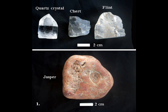Strictly, flint is chert that formed around 100 million years ago in Western European chalk. However, outside Europe, the names flint and chert are often used interchangeably. The jasper pebble is impure and consists of haematite, that is an oxide of iron, clay and fine-grained quartz.